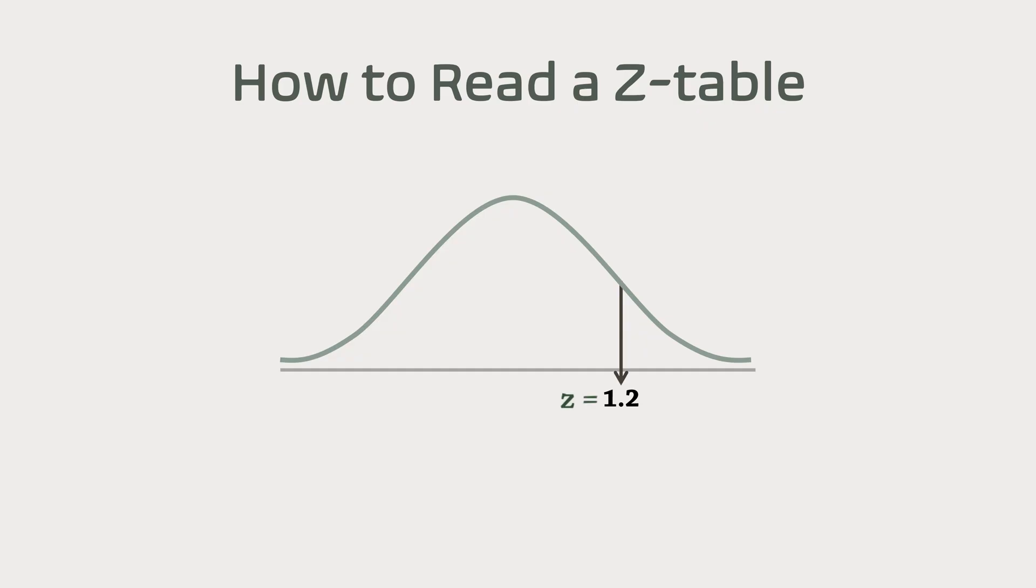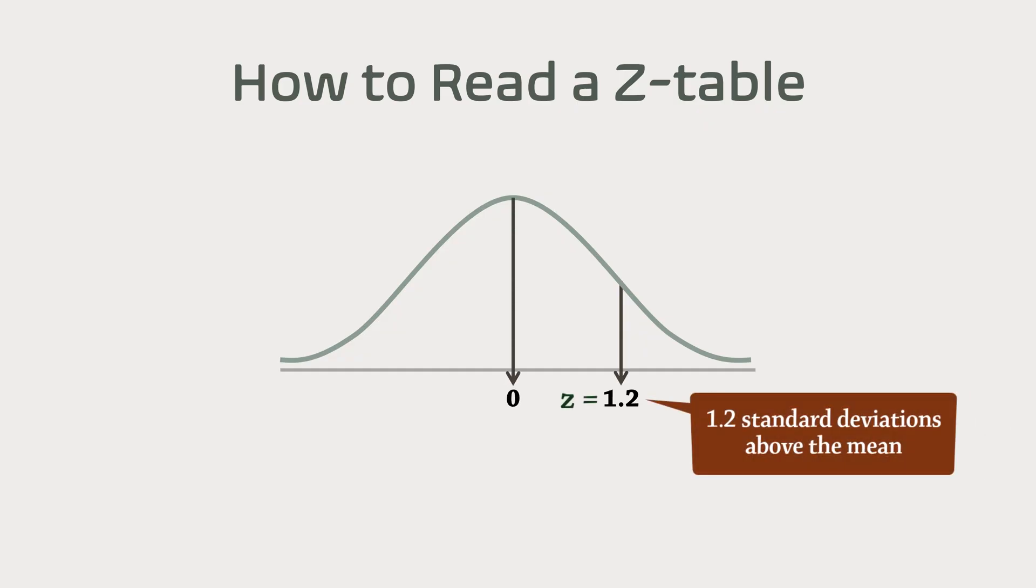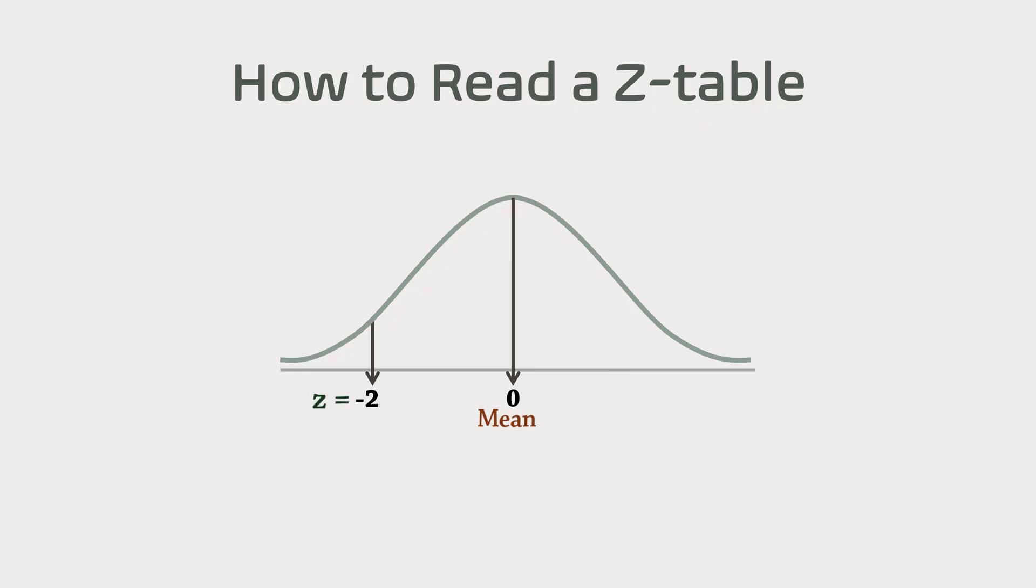A z-score of 1.2 means the value is 1.2 standard deviations above the mean, while a z-score of negative 2 is two standard deviations below the mean.